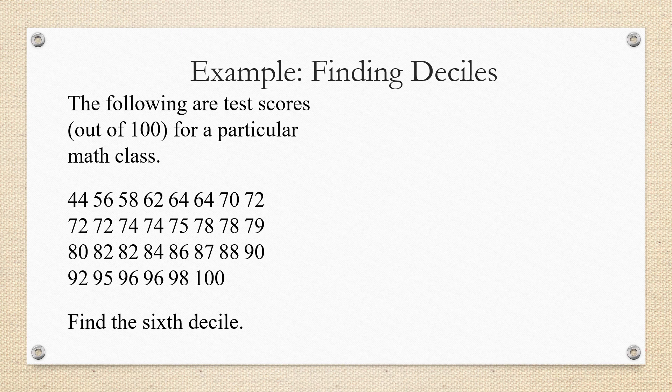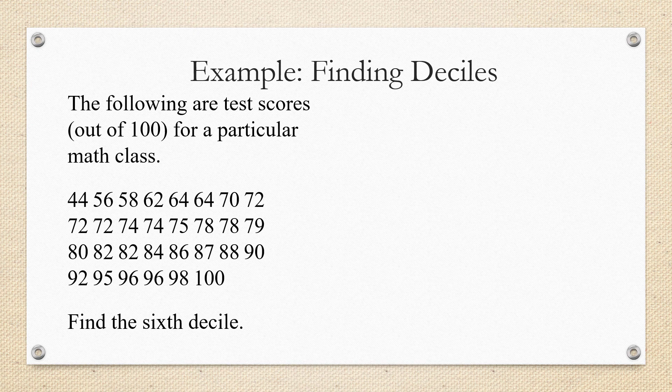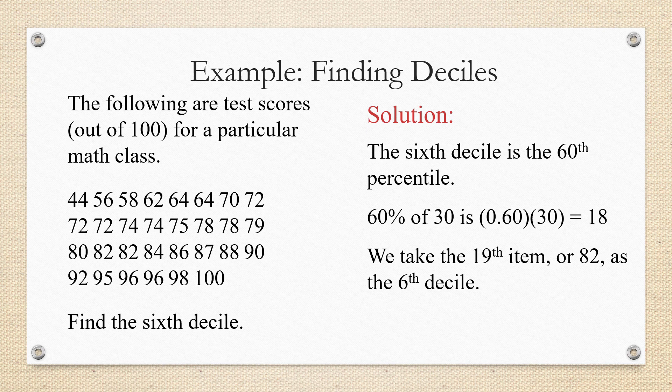For example, if we have a set of test scores from a particular class and there are 30 of them and we want to find the sixth decile, then what we would do is we would find the corresponding percentile. Since the sixth decile is the 60th percentile, we find 60 percent of 30 to figure out how many of the data items are in the bottom 60 percent. 0.60 times 30 is 18.